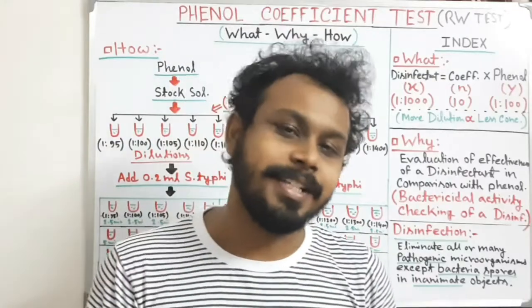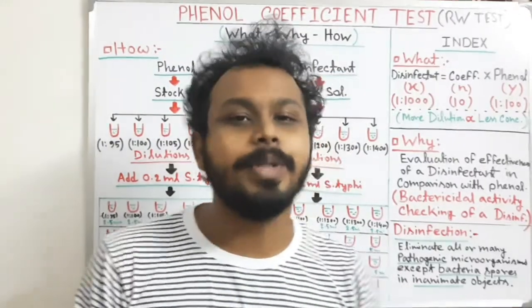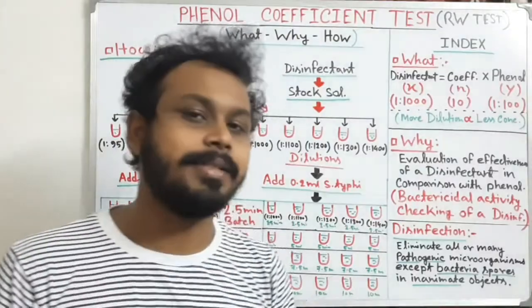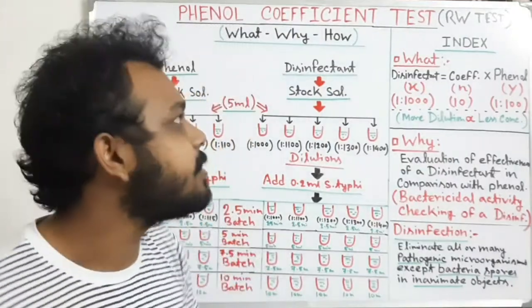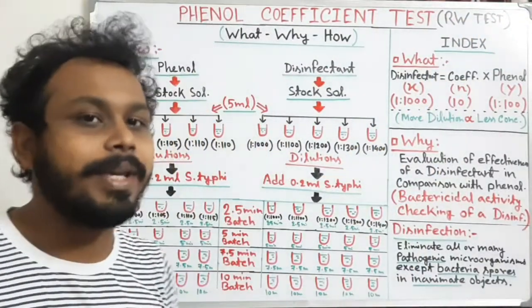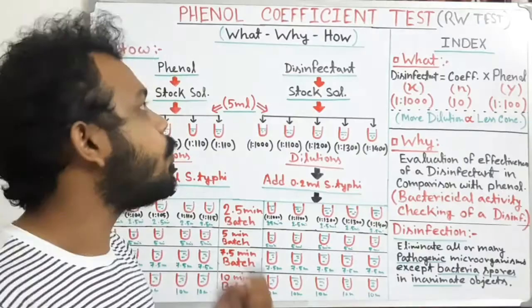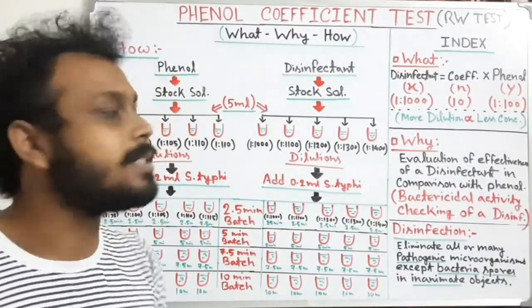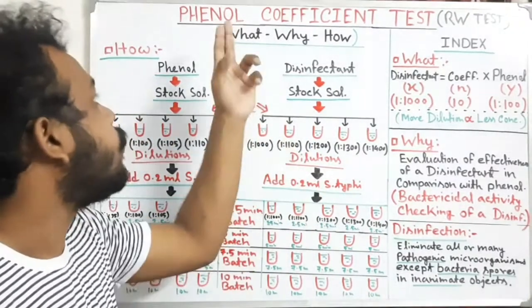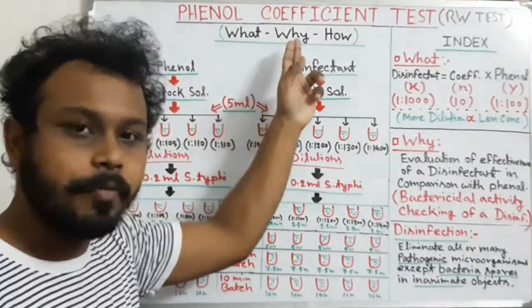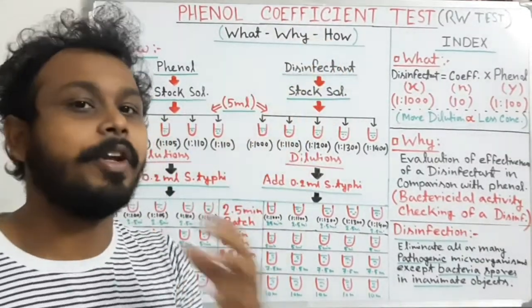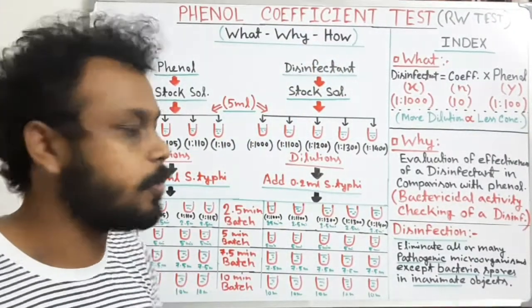Hello friends. Today in this video we are going to discuss about the phenol coefficient test, which is nowadays known as the Rideal-Walker test. We are going to know what it is, why it is performed, and how this phenol coefficient test is performed.